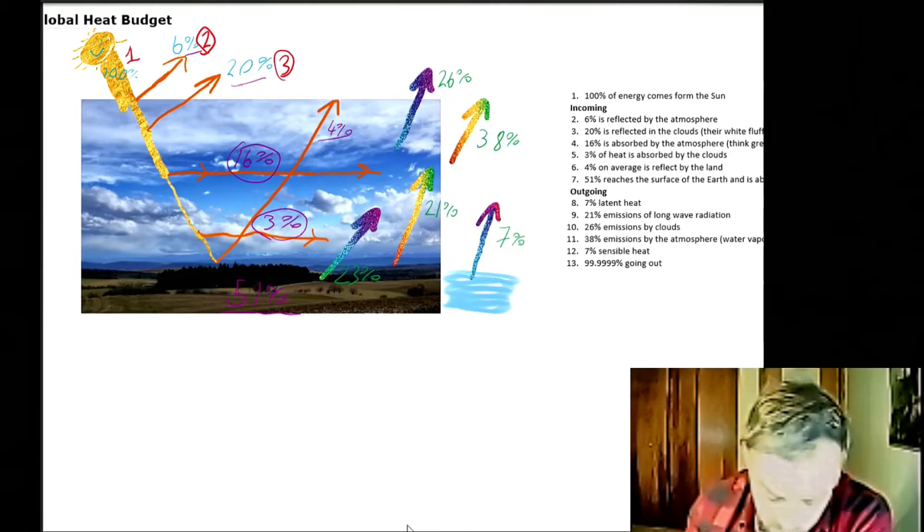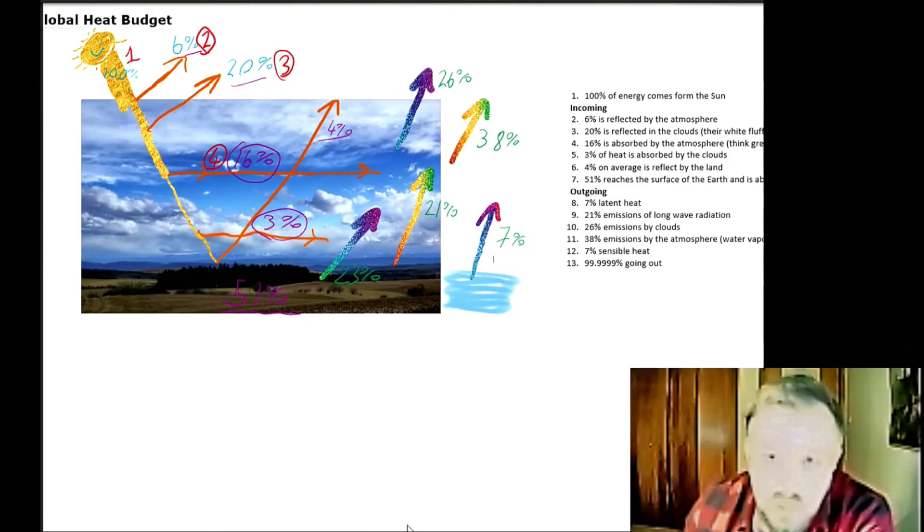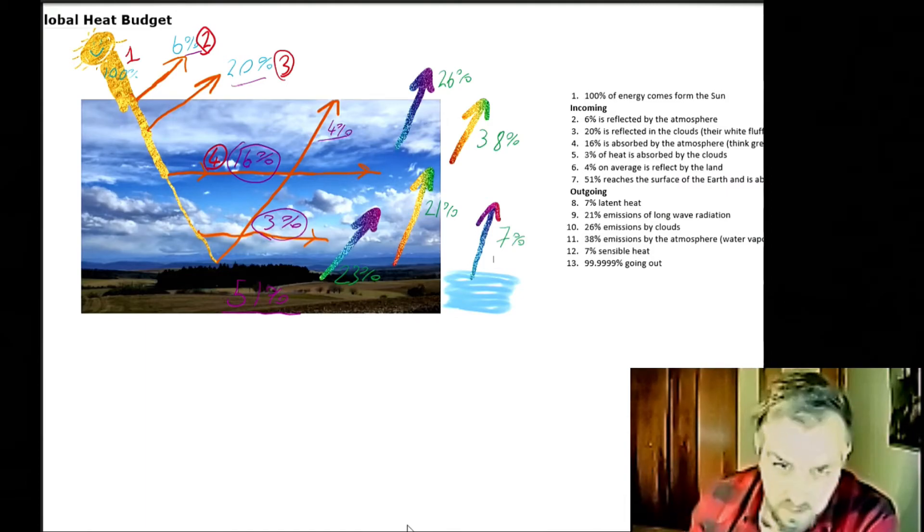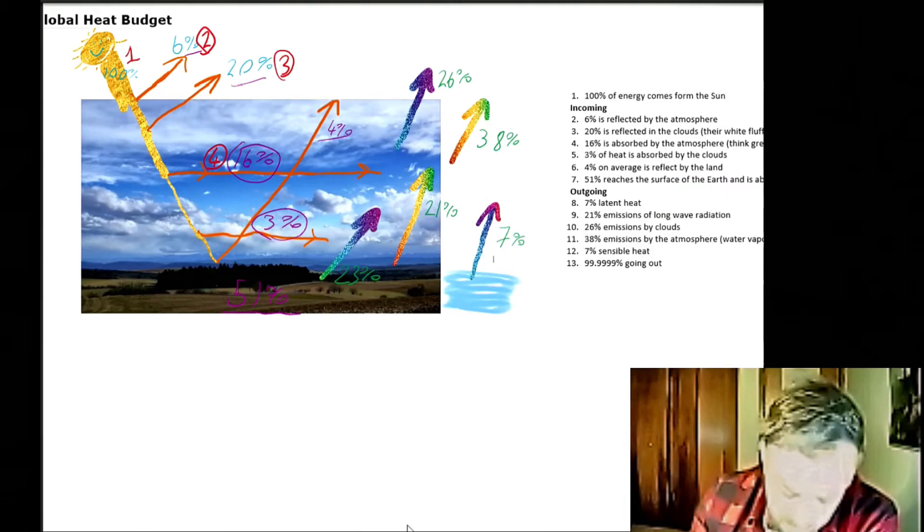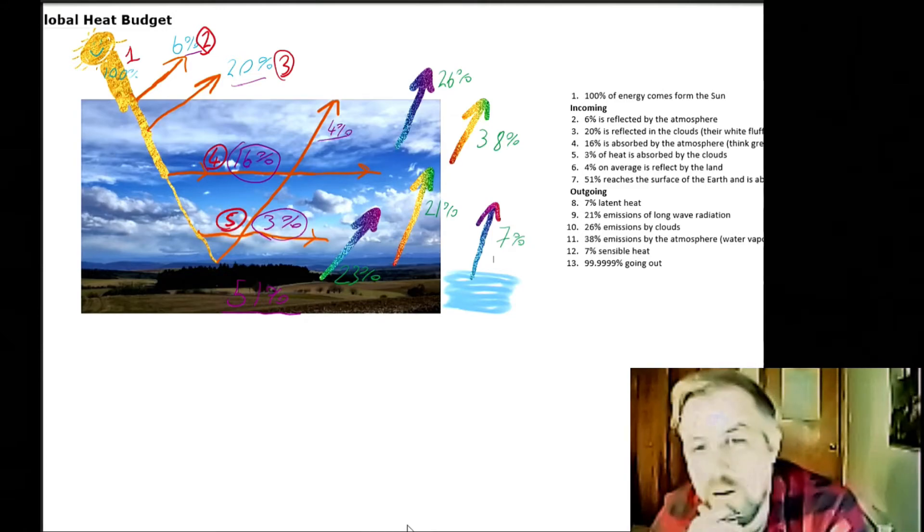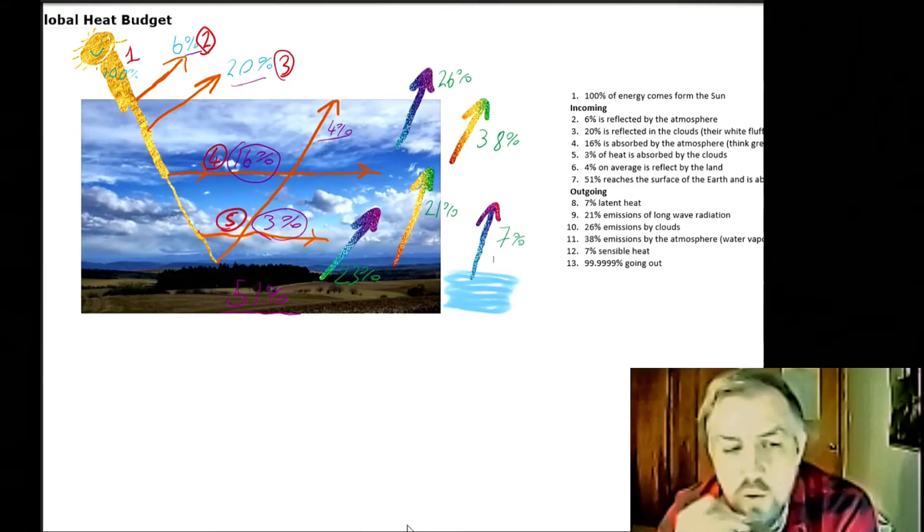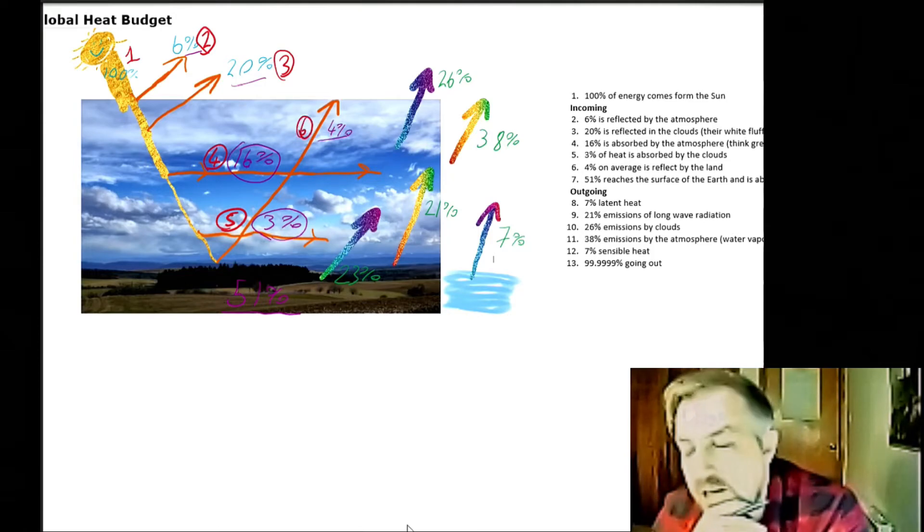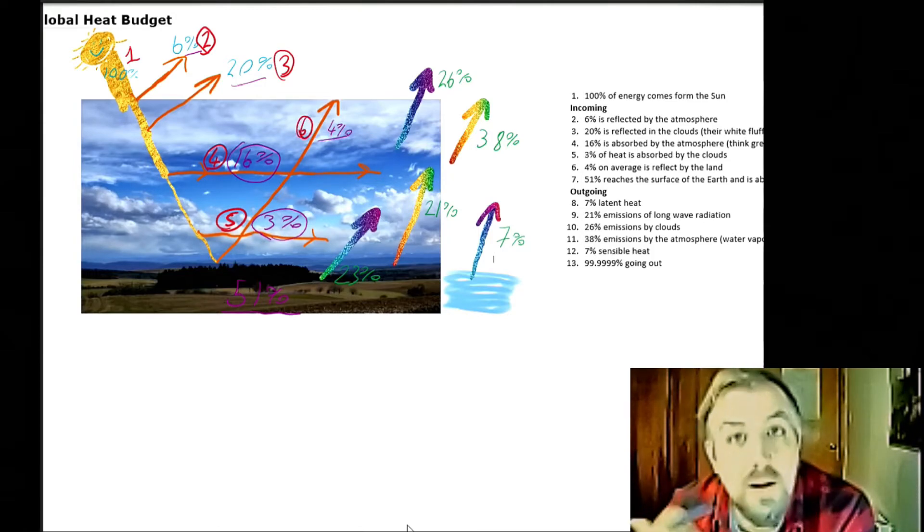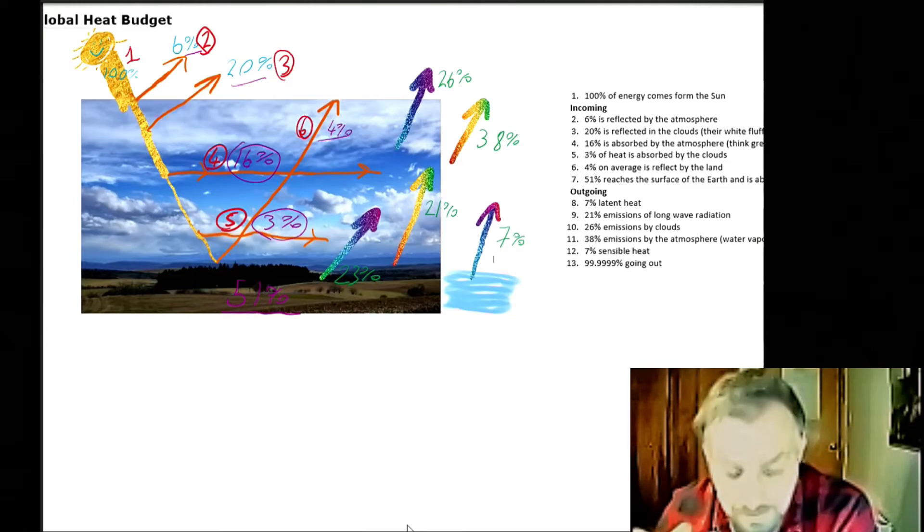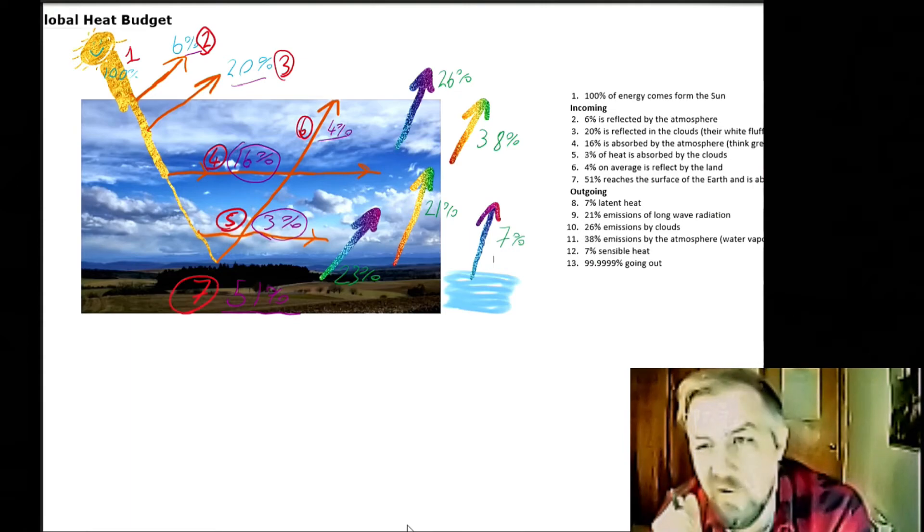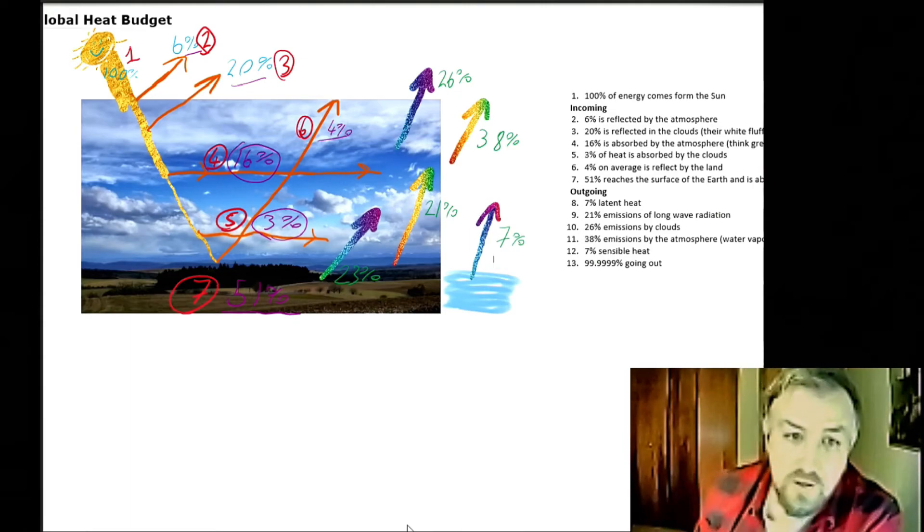Number four is our atmosphere, such as our greenhouse gases, absorbs around about 16%. And then 3% is absorbed by the clouds. So we're down to mostly the last wee thing we've got is this number six - that 4% on average is reflected by the land and is reflected back into space, which leaves us with number seven - that only 51% of our heat actually reaches the surface of the Earth.